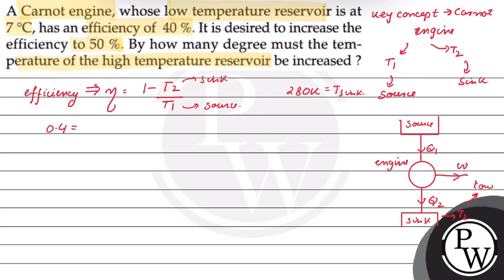So 0.4 is equals to 1 minus 280 upon T1. 280 upon T1 is equals to 0.6. So T1 value है 280 upon 0.6 is equals to 466.67 Kelvin.